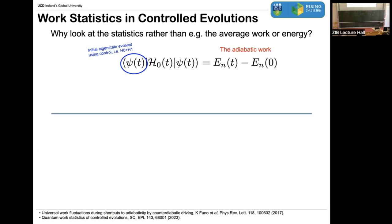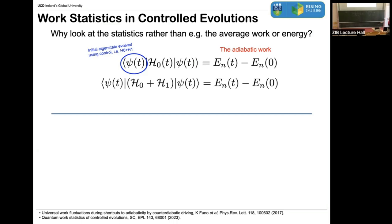This is what should happen because the evolved state is precisely mimicking an adiabatic dynamics — by definition, this should give me the adiabatic work. Less obvious, though, is if I more carefully think about what the actual average work is for the process I'm doing, calculated with respect to the total Hamiltonian, the total generator. This is not obvious, because this evolving state is the ground state of H0, but it is not an eigenstate of H0 plus H1. So it is not obvious that whenever I calculate the average energy all the way along this dynamics, I also see exactly the adiabatic work of the original Hamiltonian. This, for me, was not obvious.